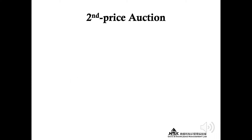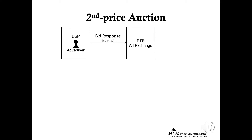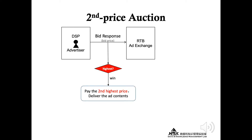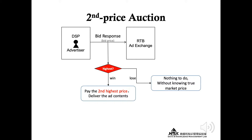Let's take a deeper look at the second-price auction used in the RTB scenario. Each advertiser will propose her bid price and send a bidding request to the ad exchange in order to win the auction. Note that only the advertiser with the highest bid price will win the auction and pay the second highest bid price in the market, which is defined as the market price. The other advertisers have nothing to do subsequently, and they have no idea about the true value of the market price — they only know that it is equal to or larger than their own bid price.